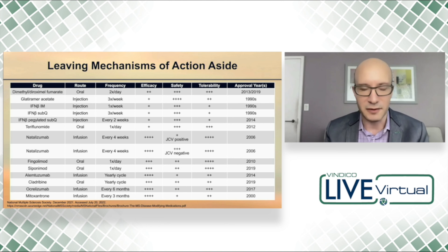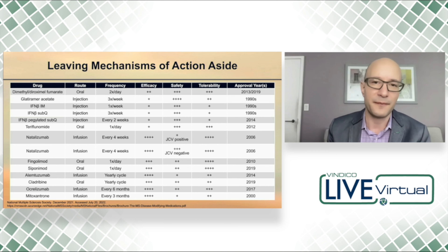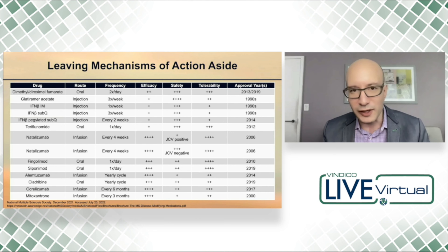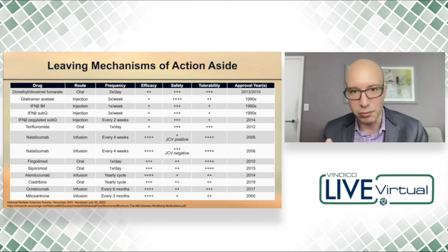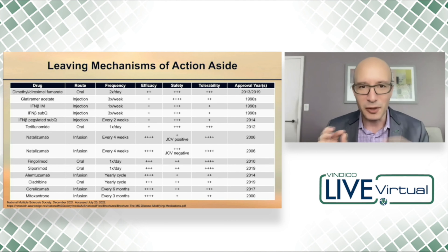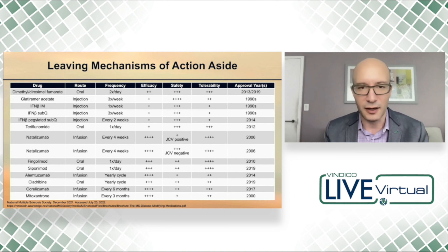Rarely do I find myself talking to a patient about disease-modifying therapies and saying, would you rather a cell depleter or a migration blocker? Because we don't really have biomarkers yet to say that a particular mechanism is going to work for a particular patient. We will ultimately, but we don't have that yet. So leaving mechanism of action aside, when we sit down with the patient, the lead consideration is: how well is this medicine likely to work?